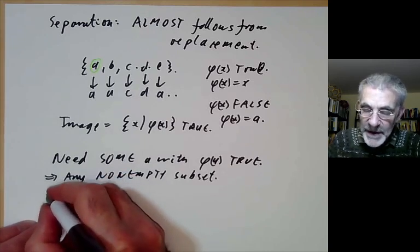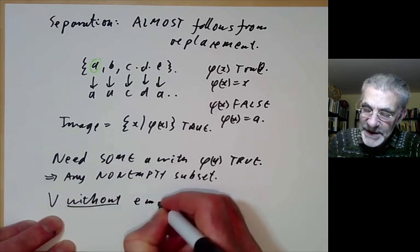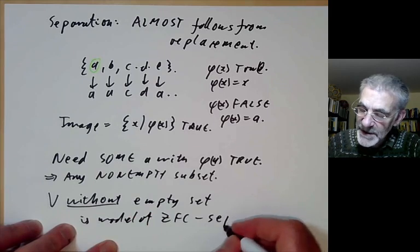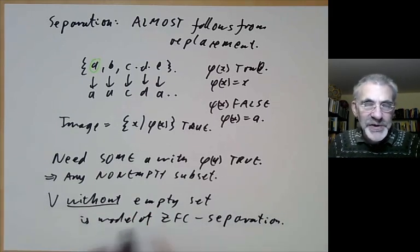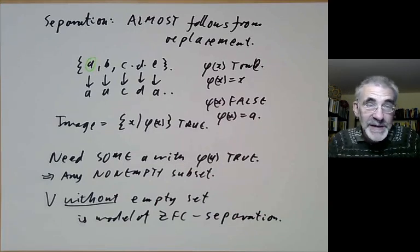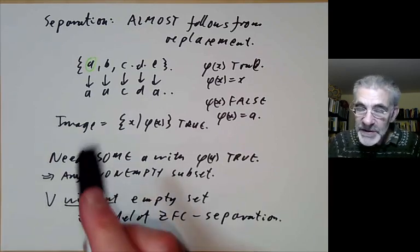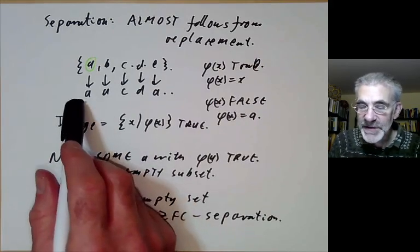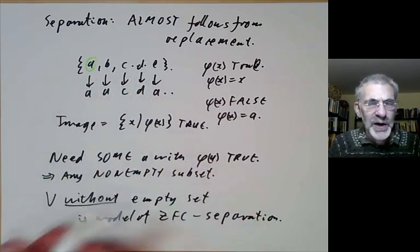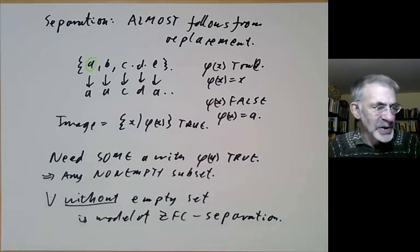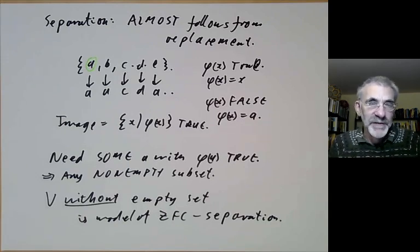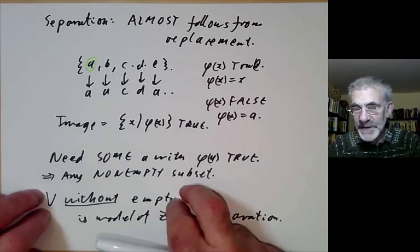The axiom of replacement will imply the axiom of separation for non-empty subsets, but it does actually fail for empty subsets. The reason is we can take the universe without the empty set, and this is a model of Zermelo-Frenkel set theory without the axiom of separation. Without separation you can't actually prove the existence of the empty set, but you can prove everything else. So the axiom of separation is really needlessly complicated — you could just replace it with an axiom saying the empty set exists. Alternatively, you can tweak the axiom of replacement very slightly, for instance by allowing partial functions that don't need to be defined everywhere. So you can actually drop the axiom of separation by making very small changes; it is usually included mostly for historical reasons.